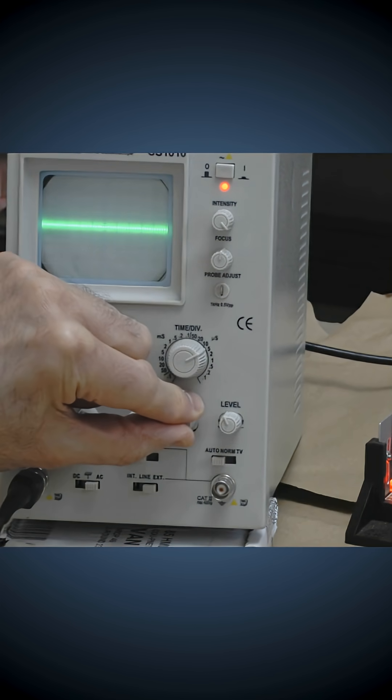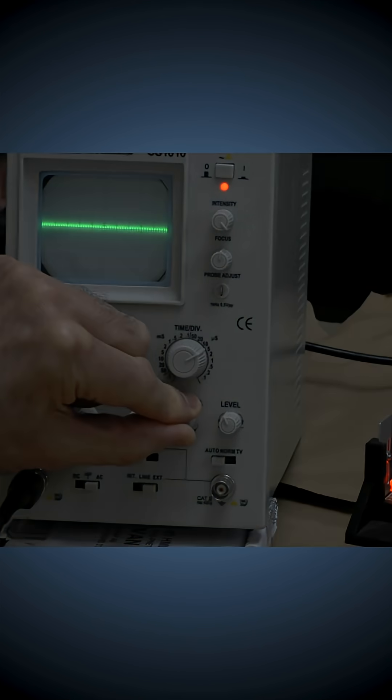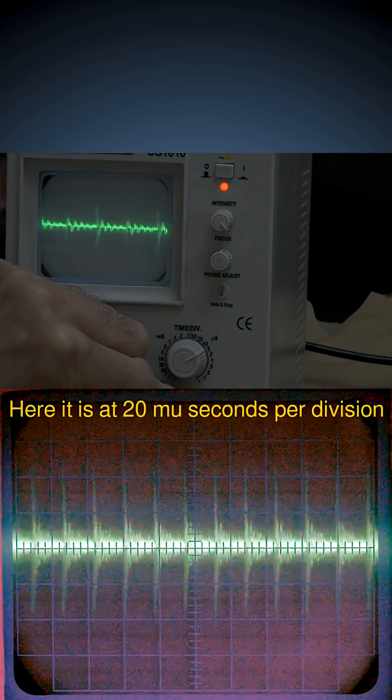If I adjust the time base, you'll notice it's actually quite big spikes. And that is plus and minus four large divisions, which is 0.4 of a volt fluctuating on the supposedly ground earth line.